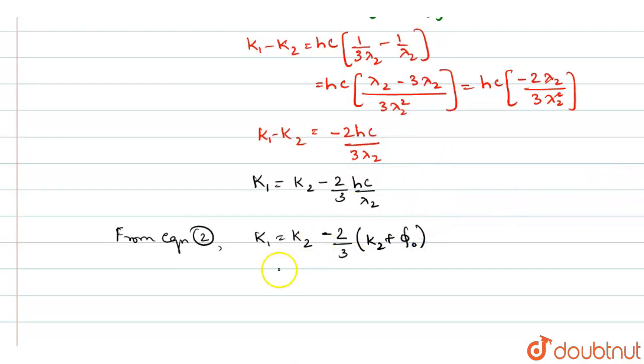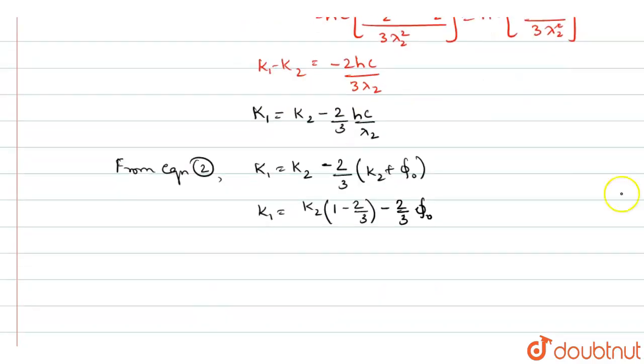Again simplifying the terms, K1 is equal to, see here between these two, we will take K2 common, so that we will get 1 minus 2 by 3, minus we will write minus 2 by 3 phi naught. So this when you simplify it, you will get the relation as K1 is equal to K2 by 3 minus 2 by 3 phi naught.